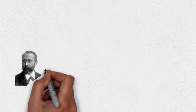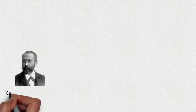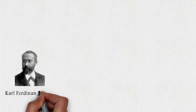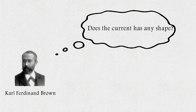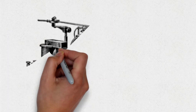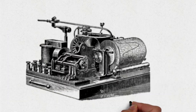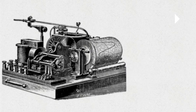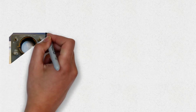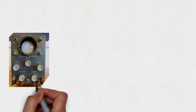Once a curious physicist, Carl Ferdinand Braun, asked: are there any shapes or figures in current? His curiosity gave birth to the first oscilloscope, which was just plotting a graph over a paper roll drum. This further curiosity made the invention of the first cathode ray oscilloscope.